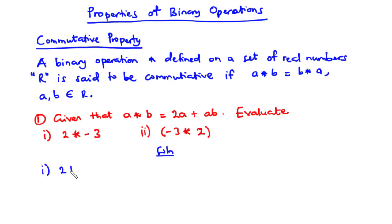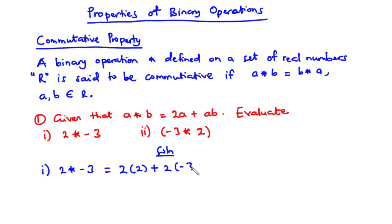Starting from (I): 2 star negative 3. We are going to use the rule for the binary operation A star B, so our A is going to be 2 and our B is going to be negative 3. So we have 2 star negative 3 equals 2 times 2 plus 2 times negative 3. 2 times 2 is 4, and 2 times negative 3 is negative 6. So 4 plus negative 6 is negative 2.